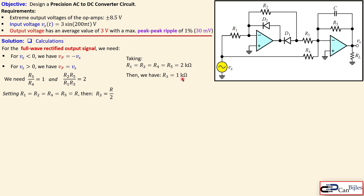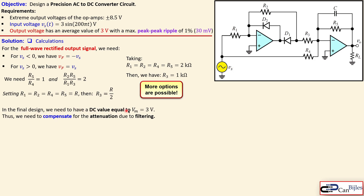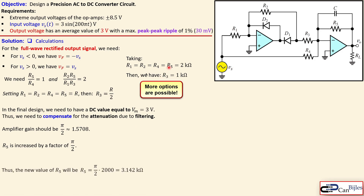The chosen values are 2 kΩ and 1 kΩ as already discussed, and more options are possible. In the final design we need DC output equal to Vm = 3 V, so we must compensate for the gain reduction due to filtering. The gain needs to be 1.57, so we increase R5. The new R5 = π/2 × 2000 Ω ≈ 3.14 kΩ, slightly larger than before.